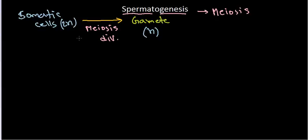Let's talk about the different stages of sperm production. At the very beginning, there are mother cells from where the sperms are generated. Those cells are simply termed as the spermatogonial stem cells.